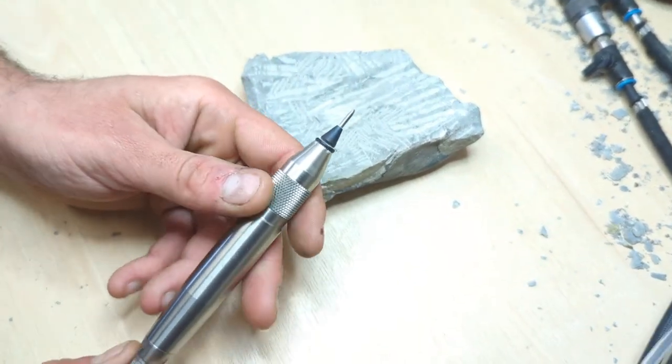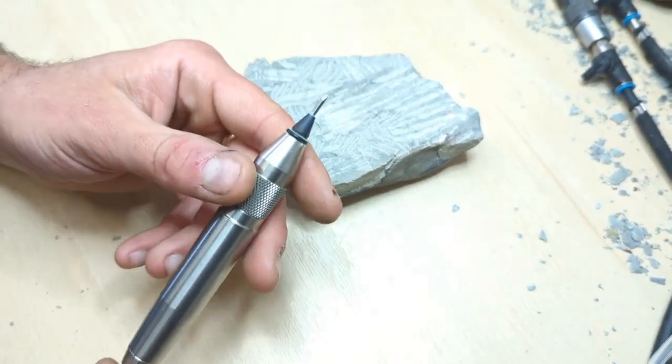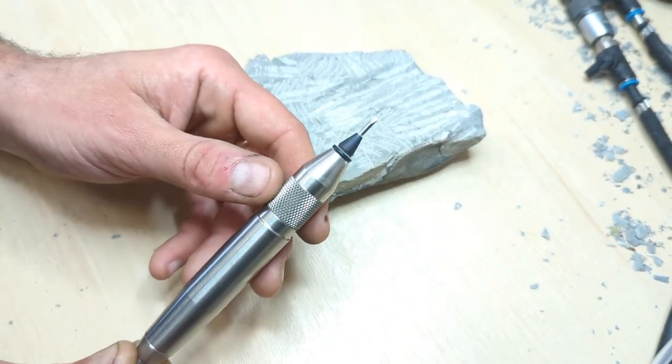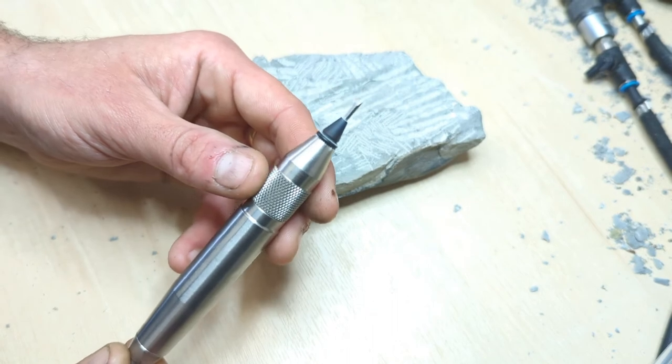As you can see, the chisel does not rotate in use and also, as with all air pens, just use the minimal amount of pressure required to do the job.